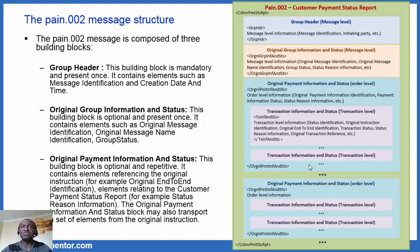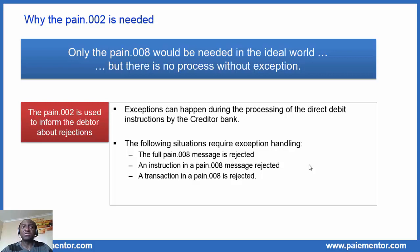Why is the PAYING 2 message actually needed? The direct answer to this question is two words: exception handling. In an ideal world, only the PAYING 8 message would be needed. But we know there is no process without exceptions. Exceptions can happen during the processing of the direct debit message and related instructions by the creditor bank. Issues can occur at message level, instruction level, or transaction level. As a result, the full PAYING 8 message can be rejected, or an instruction or a transaction in the PAYING 8 message can be rejected. The rejections can occur for many reasons, and that is where reason codes come into play.